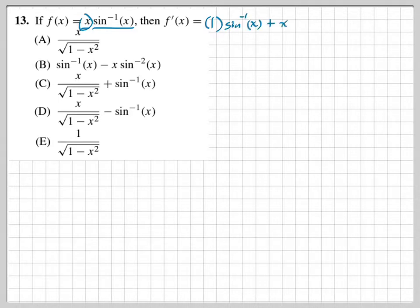Then we have x times the derivative of inverse sine. The derivative of arcsin(x) is 1 over the square root of 1 minus x squared. Now let's see which answer choice matches what we got.